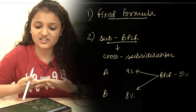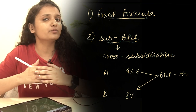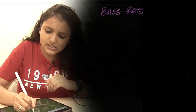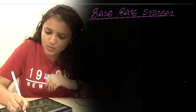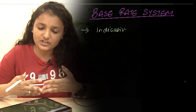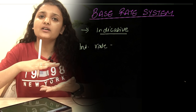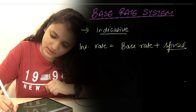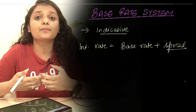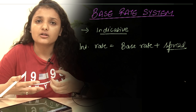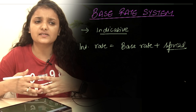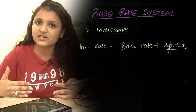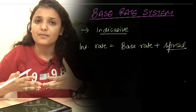By definition, the base rate system means the minimum interest rate that a bank could charge to its most credit-worthy customers. Unlike the BPLR system where there was no fixed formula, under this system there was an indicative formula. The bank charged interest rates by taking the base rate plus a spread over and above it. The spread is a profit margin charged by the bank based on the riskiness of the customer — riskier customers attract a higher spread.